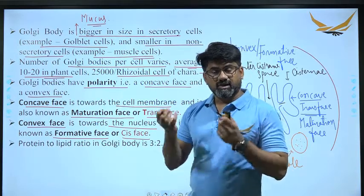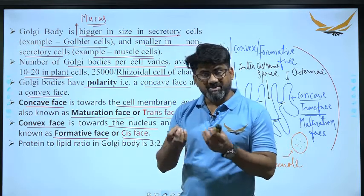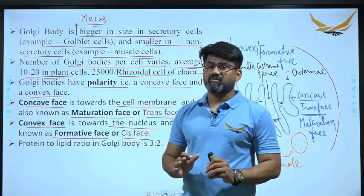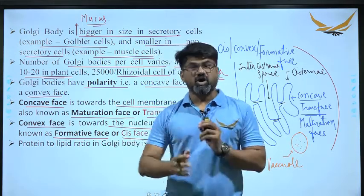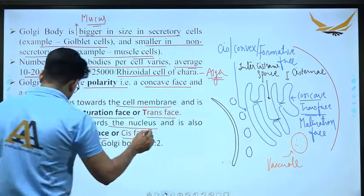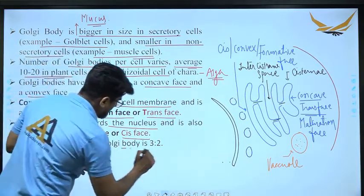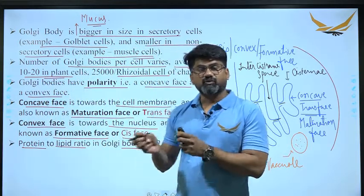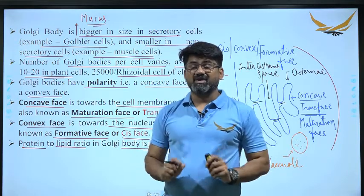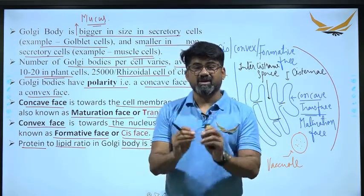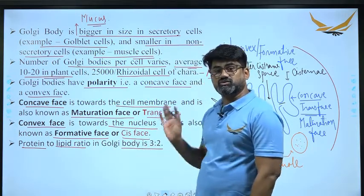Golgi body is also formed by membrane. The protein to lipid ratio in the cisternal membrane of Golgi body is 3:2. This is similar to the plasma membrane with small variations.